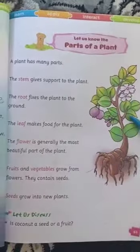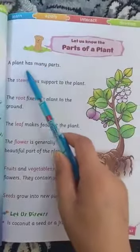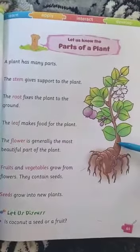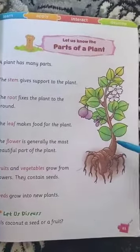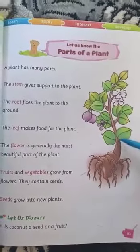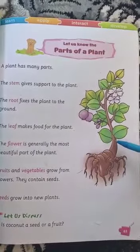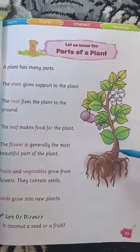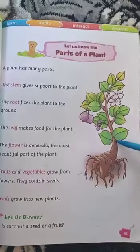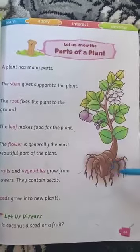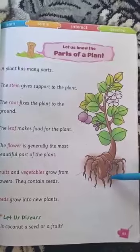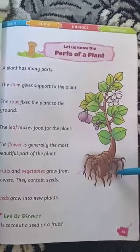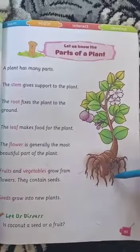A plant has many parts. The roots support the plant and help it stay in the ground. The stem supports the plant and helps it grow upright. The leaves and other parts all play an important role for the plant.